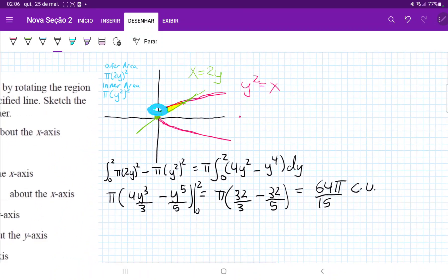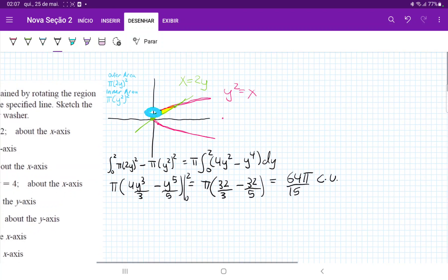And that is what we get when we take this area and we revolve it about the y-axis. So all we did was we took the area of the bigger ring, whose radius is defined by the curve 2y, minus the area of the smaller ring, whose radius is defined by y squared. And we subtracted those areas. And then we summed up these donuts from 0 to 2.